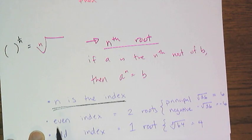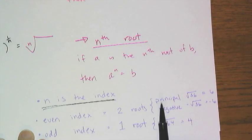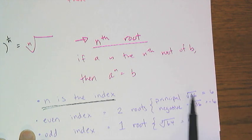Now a little note: numbers that have been rooted with an even index, they have two roots. A principal one, which is the positive root, like the square root of 36 is 6, and a negative one.